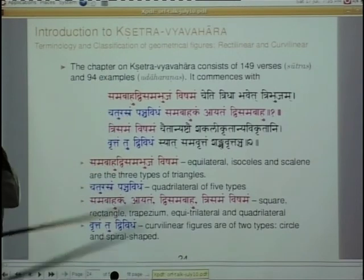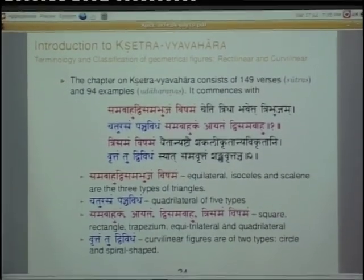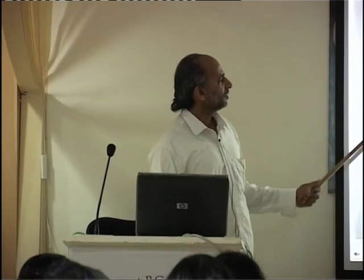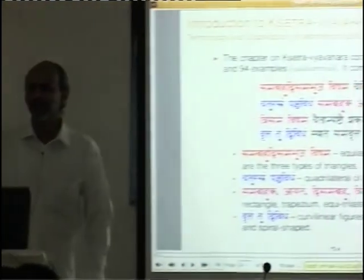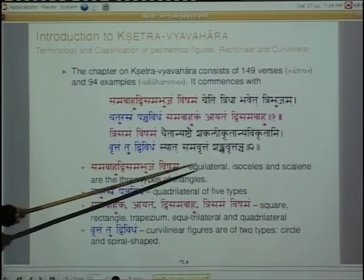The other thing I want to mention is Kshetra Vyavahara — geometry. Kshetra means field or floor, and Vyavahara is something you deal with — so geometry is called Kshetra Vyavahara. To start Kshetra Vyavahara, you first have to define certain geometrical shapes clearly and then study their properties. When he says Tribhujam — triangle — you can think of equilateral triangle, two sides equal, or all angles. He classifies equilateral, isosceles, and scalene triangles.